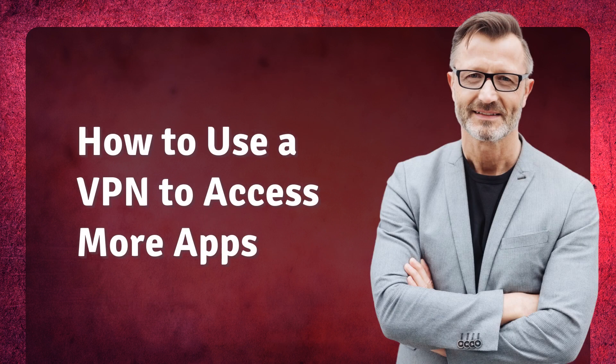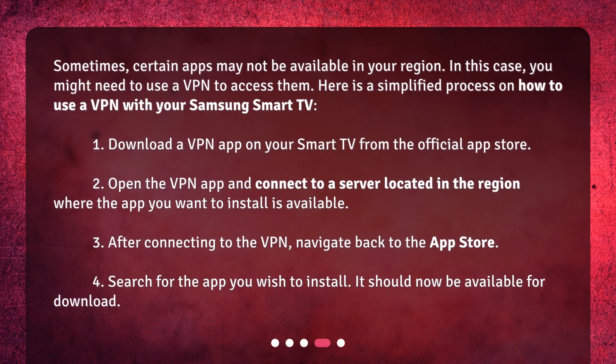Sometimes certain apps may not be available in your region. In this case, you might need to use a VPN to access them. Here is a simplified process: 1. Download a VPN app on your Smart TV from the official App Store. 2. Open the VPN app and connect to a server located in the region where the app you want to install is available. 3. After connecting to the VPN, navigate back to the App Store. 4. Search for the app you wish to install — it should now be available for download.